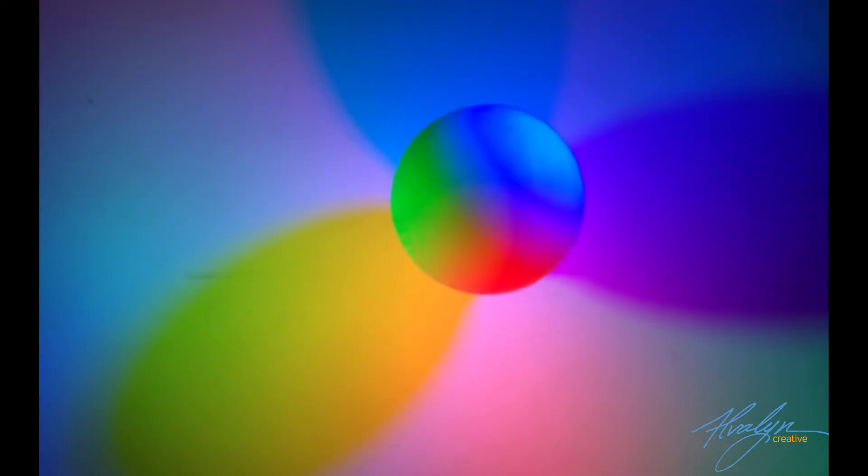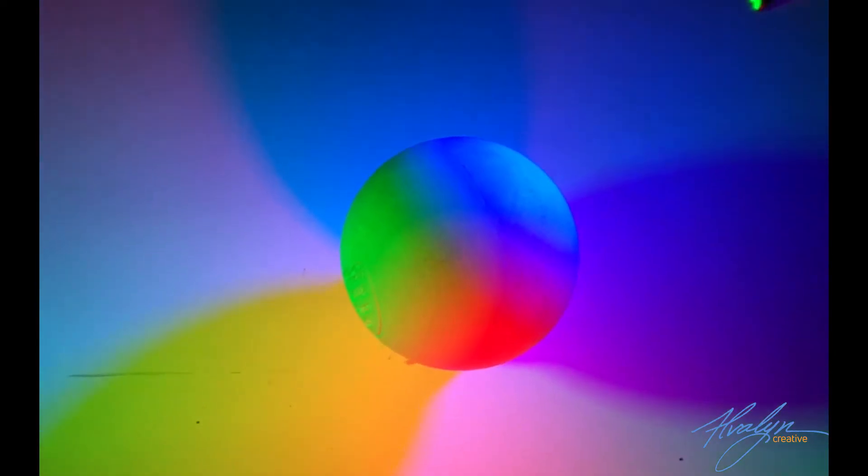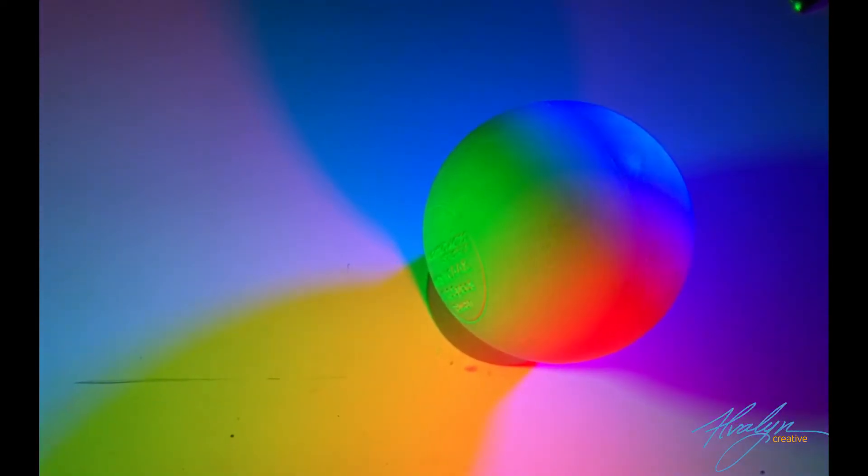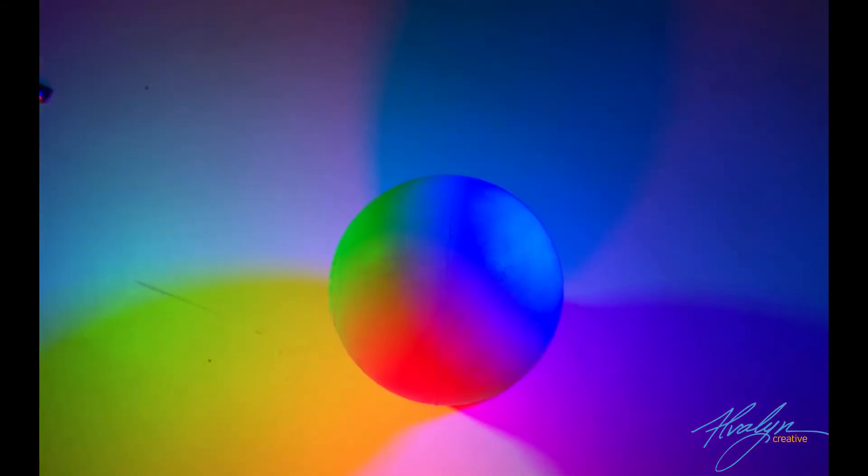And here you can see on a sphere, the sphere is also white. We have the green, and the red, and the blue.